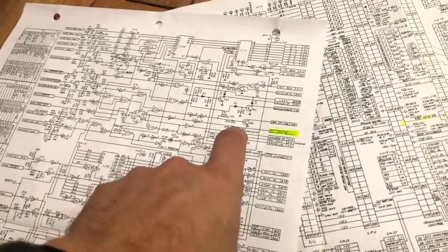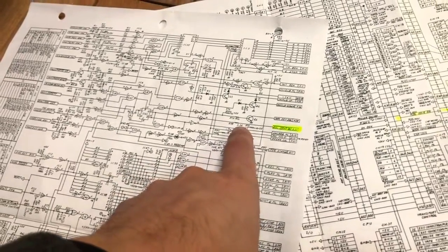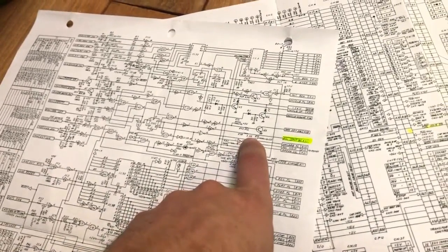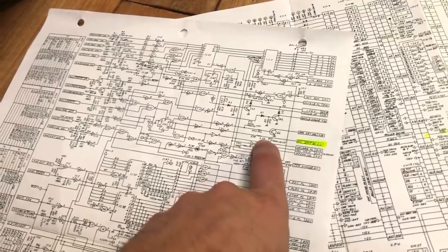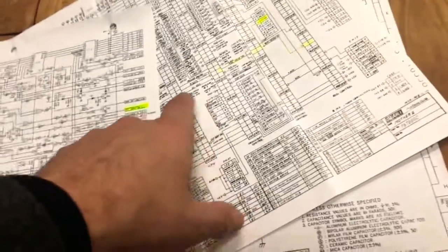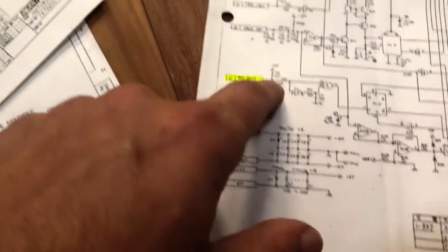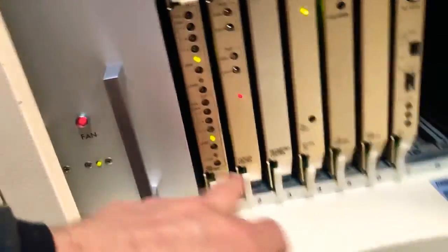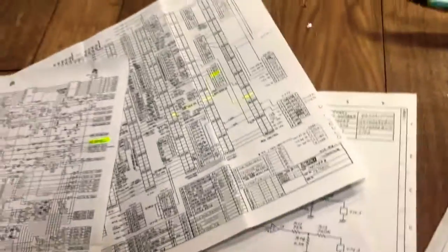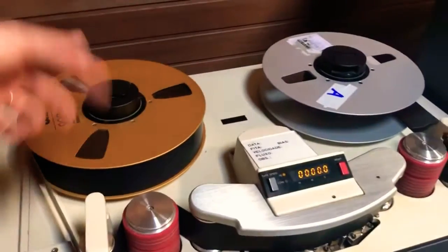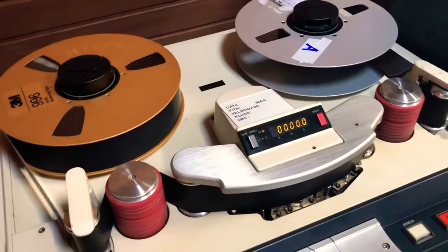It rises to 2.5 volts, and when it's 2.5 almost 3 volts, the reel control turns off the servo motors. And that's dangerous because the tape begins to, it's a lot of mess here.